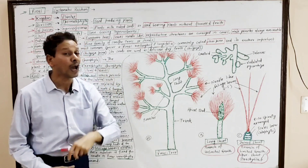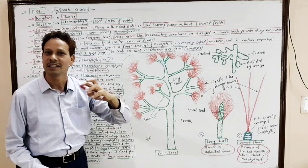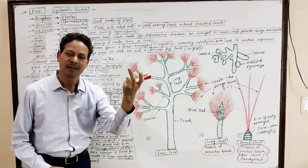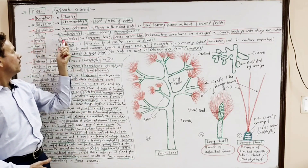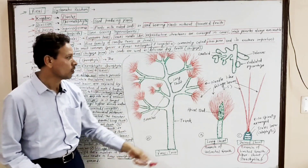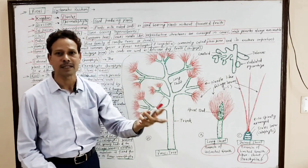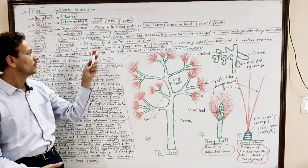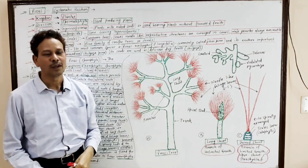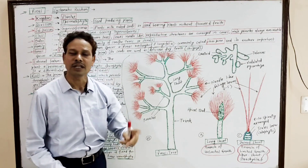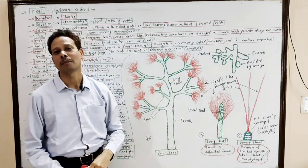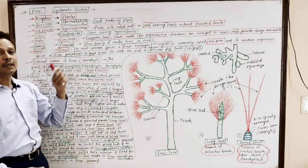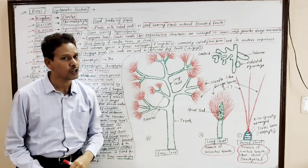Class Coniferopsida — these gymnosperms, including Pinus, are cone-bearing plants that produce special reproductive structures called cones. Order Coniferales — these are evergreen trees because the needle-like leaves persist from three to ten years. The reproductive structures are arranged in the form of cones, and in Pinus the male gametes are always non-motile.